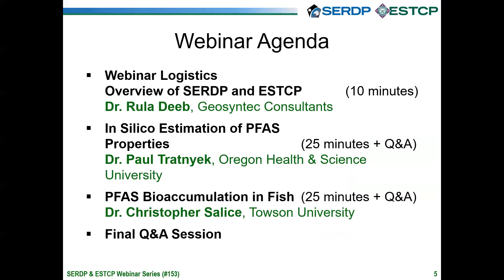This webinar focuses on DOD-funded research to develop reliable tools for assessing the environmental risks of PFAS. First, Dr. Paul Tretniak from the Oregon Health and Science University will talk about methods for evaluating state-determining physical chemical properties of most PFAS. Paul's presentation will be followed by a brief Q&A session. Then, Dr. Chris Salis from Townsend University will discuss an effective model for understanding the factors that influence the bioaccumulation of PFAS in freshwater fish. This talk will also be followed by a Q&A session, and we will conclude the webinar with a longer Q&A featuring both of today's speakers.